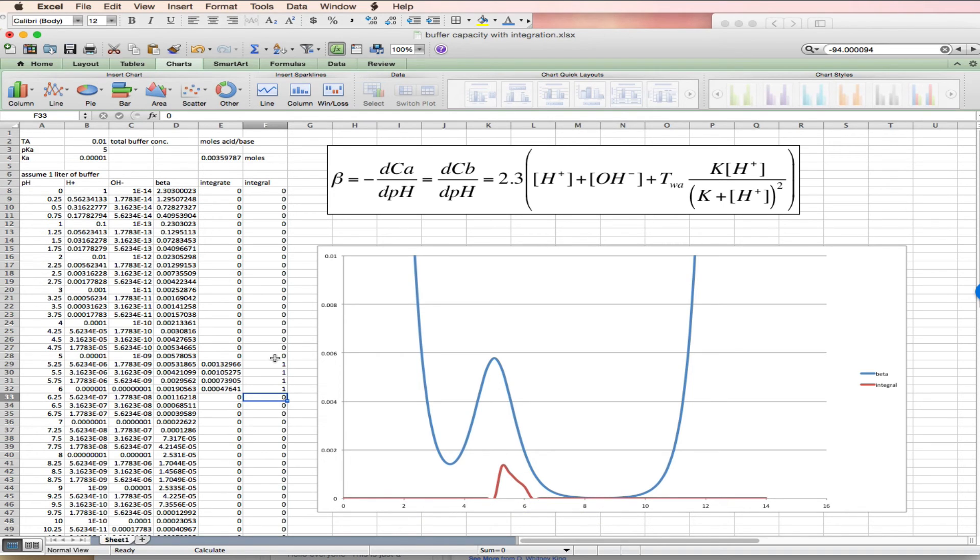So that's if I'm adding base to a buffered solution at pH 5. What if I'm adding acid? So I'll go ahead and reset all of these. Set all those to zero. Let's go ahead and add acid. So I'll just add a little bit of acid and I'll add a little more and I'll add a little more.